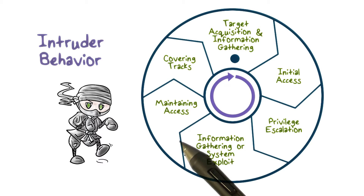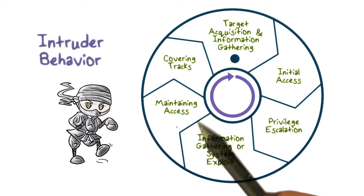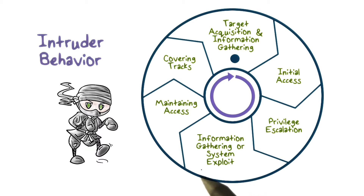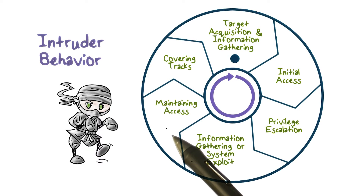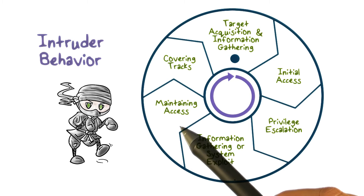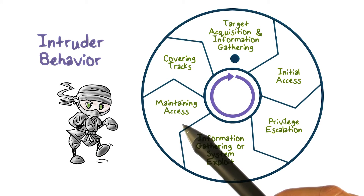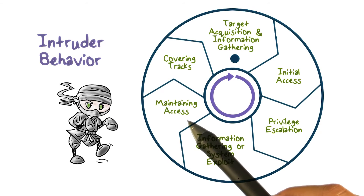The fifth step is maintaining access. This is important because an attack may not be a one-time action — the attacker may choose to come back from time to time or continue the exploit for a while. Therefore, the attacker may install backdoors or other malicious software on the target system so that he can continue to access it.